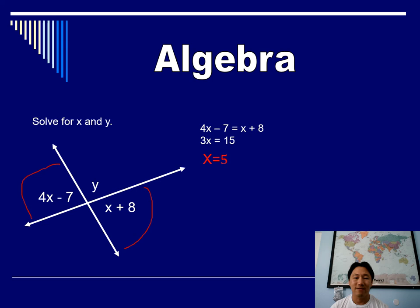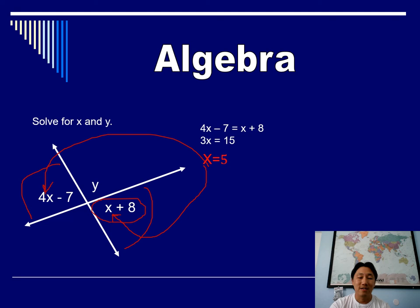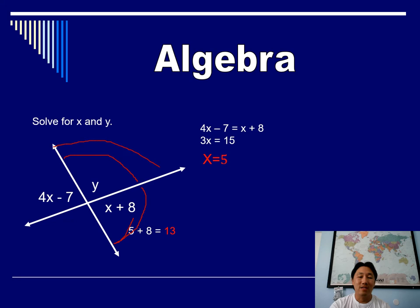Now solve for y. You can plug x into either expression — I'll choose the simpler one. Plugging in 5 gives 5 plus 8 equals 13, so that angle is 13 degrees. Since these two angles together make a straight line, they add up to 180 degrees. So y equals 180 minus 13, which gives y equals 167.